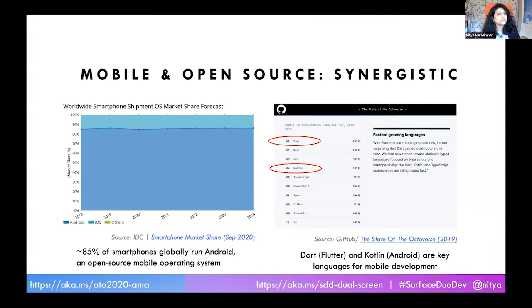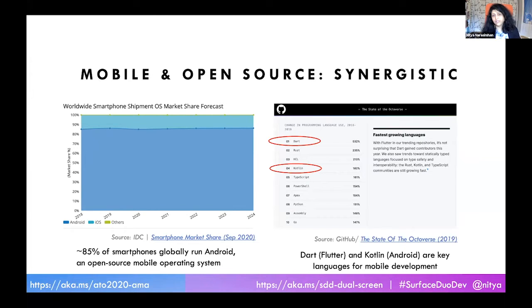So this is an open source conference — why mobile? It turns out that mobile and open source are actually more synergistic than you might think. If you look at the graphic on the left, from an IDC smartphones report, 85% plus of the global smartphone market is dependent on Android as the operating system. Android is an open source mobile operating system, and it's the open source nature of Android that makes it possible for so many manufacturers and ecosystems to take and adapt it. On the right side is a graphic from GitHub's State of the Octoverse report looking at the fastest growing programming languages. Dart and Kotlin are fueled by mobile development — Dart is the language behind Flutter, and Kotlin is the now preferred language for developing Android apps.